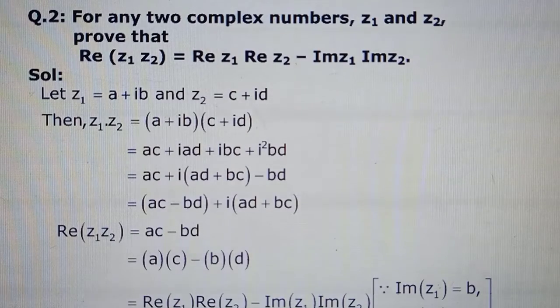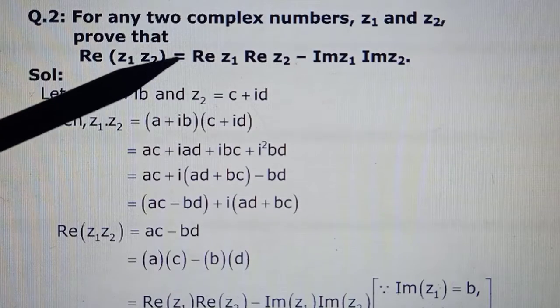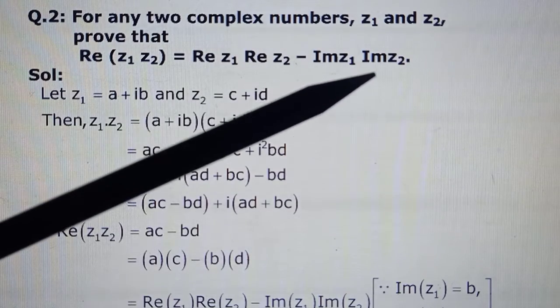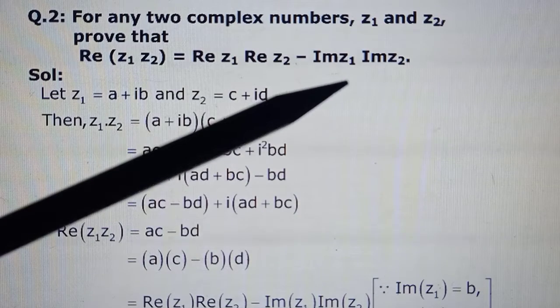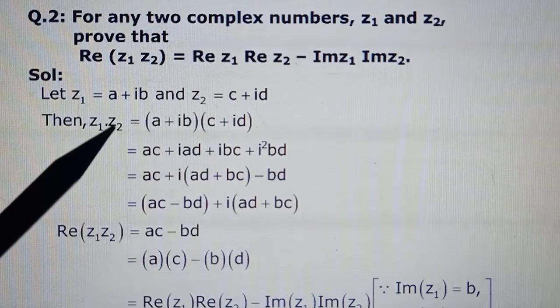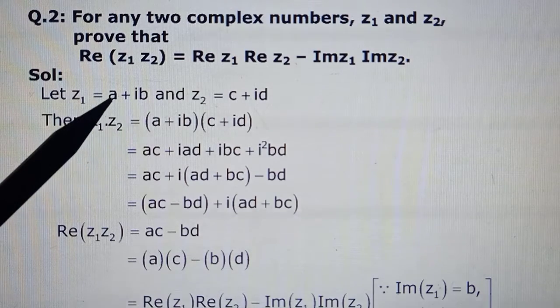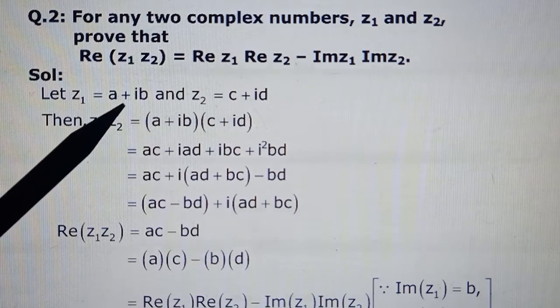Second question now, children. For any two complex numbers z₁ and z₂, you have to prove that the real part of z₁ times z₂ will be the same as the real part of z₁ times the real part of z₂ minus the imaginary part of z₁ times the imaginary part of z₂. For such questions, we assume the two numbers are complex, so they will be of the form a + ib. So let the first number be a + ib, suppose, and the second number is c + id.